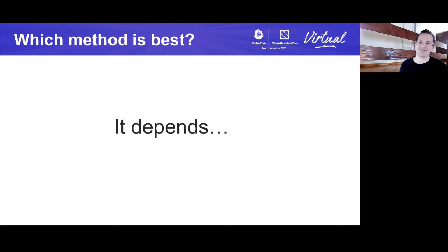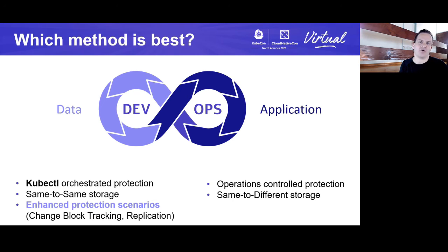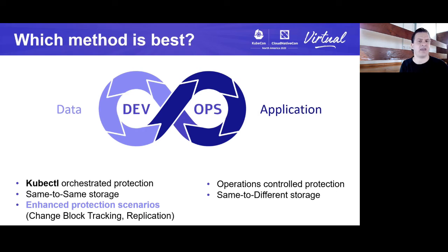So which method is best? Which one should you use? As always, it depends. If you are orchestrating your infrastructure from Kubernetes and you're using kubectl or GitOps to manage your infrastructure, then the data-driven approach offers a vastly enhanced protection capability, because you can leverage things like change block tracking and replication that are not available via the CSI today. If you have centralized operations teams that are performing lifecycle or centralized backup and recovery for traditional and containerized apps, then the application-centric model may be more appropriate for you.